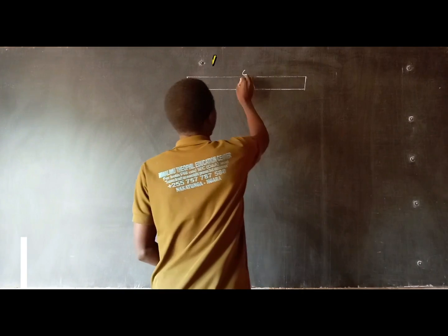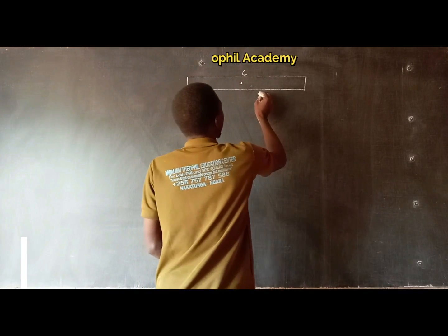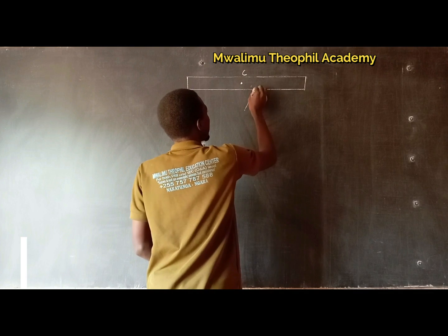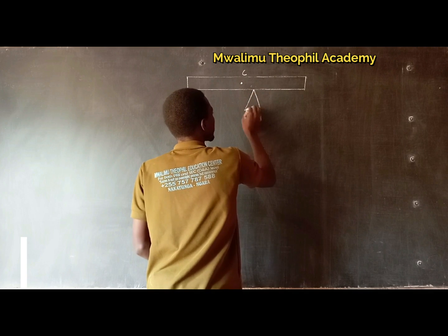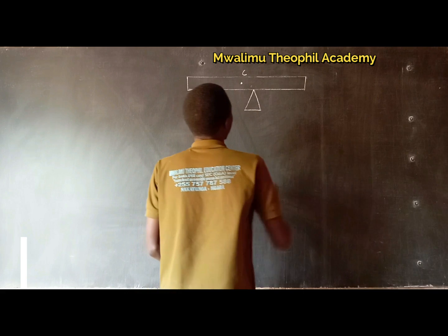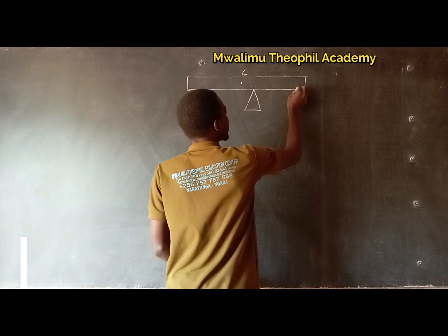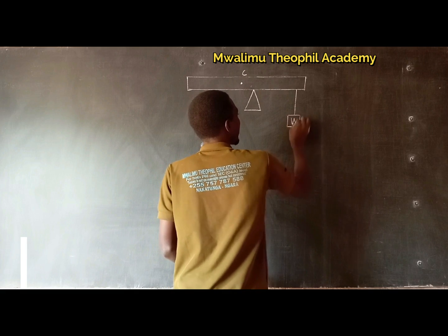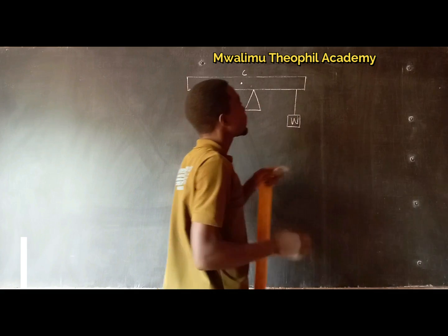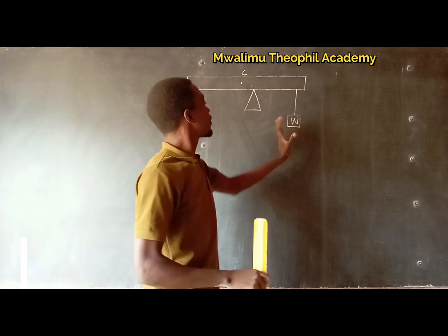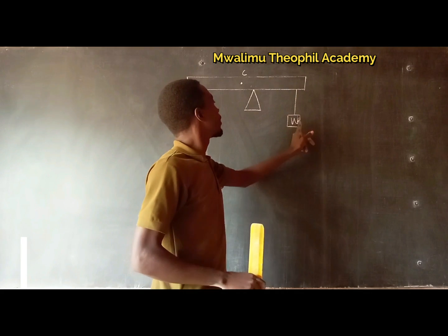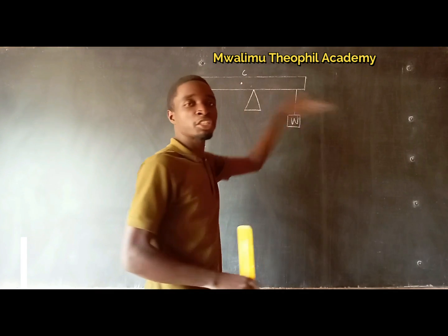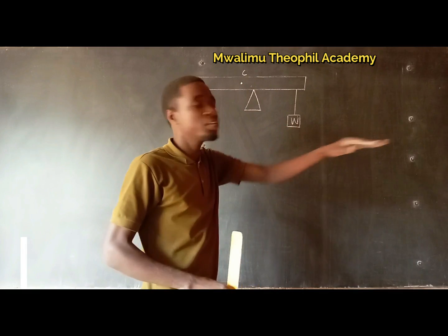Now, let us say we have put a balancing point here — this is a pivot. And there is a weight W hung at this part. Just assume we have put this weight to the point where the ruler becomes in rotational balance, meaning it becomes in equilibrium.